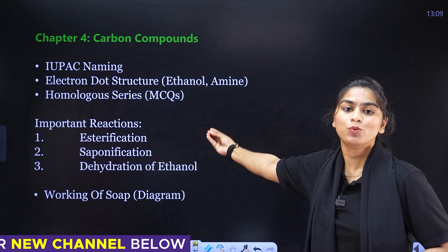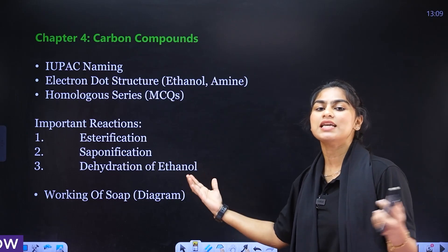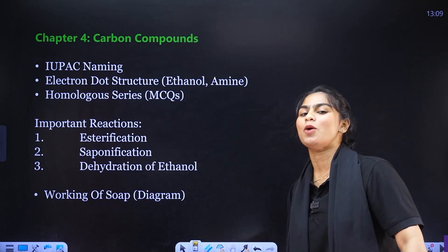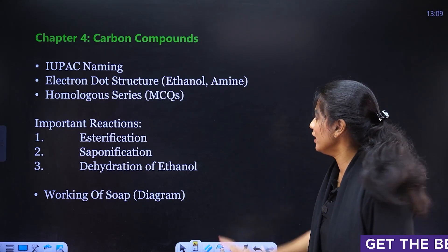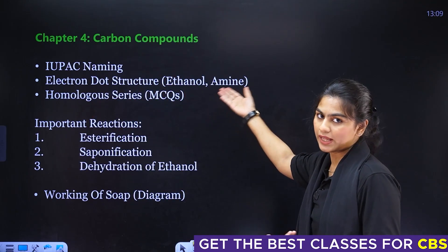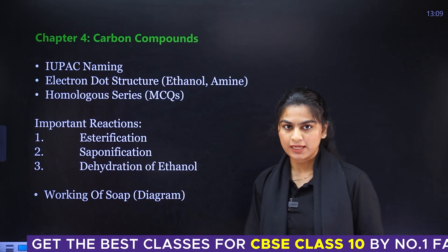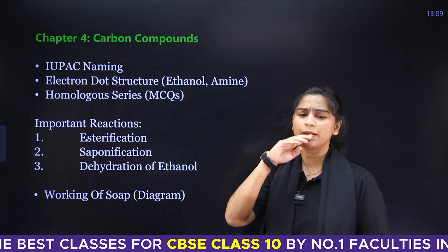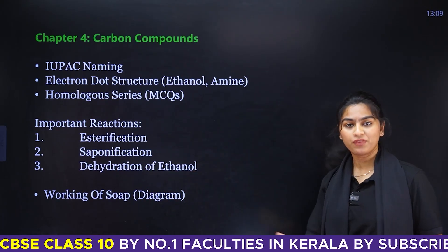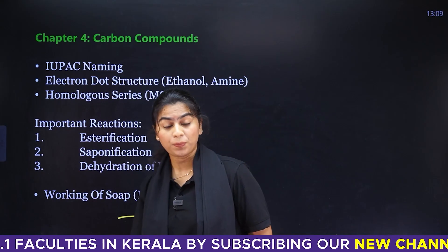The last chemistry chapter is Carbon and its Compounds. This chapter has many important topics. IUPAC naming is very important, along with electron dot structures and ethanol structures. MCQs on homologous series are important. Key reactions include Esterification, Saponification, and Dehydration of Ethanol — these are very important reactions. Also study the working of soap.